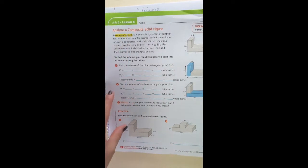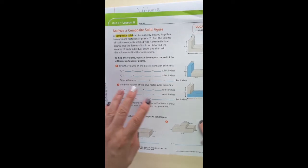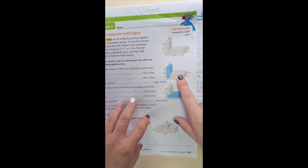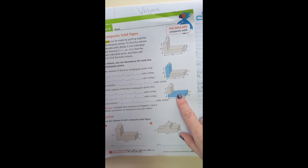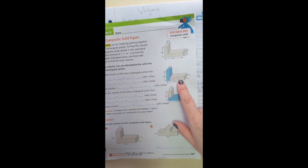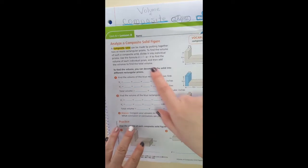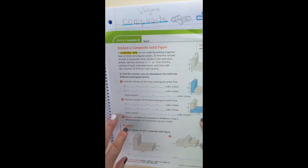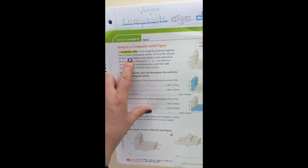we're going to go ahead and read this part. It says Analyze a composite solid figure. So these are showing you pictures of kind of what I was talking about earlier, that it's like stacking two rectangular prisms on top of each other or side by side. Anyway, a composite solid can be made by putting together two or more rectangular prisms.